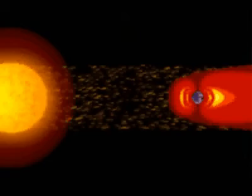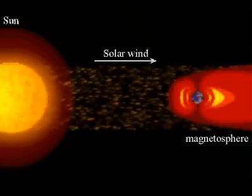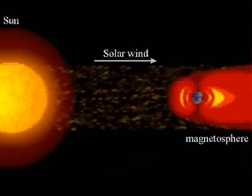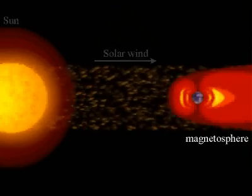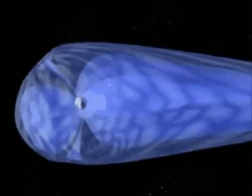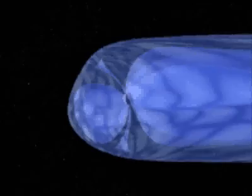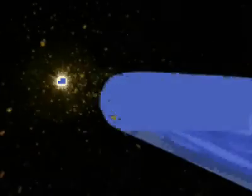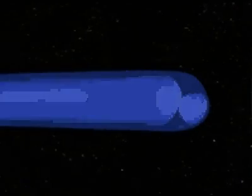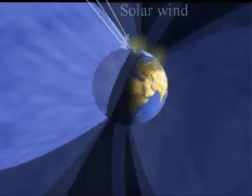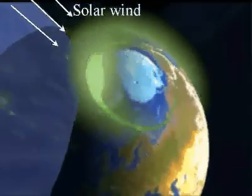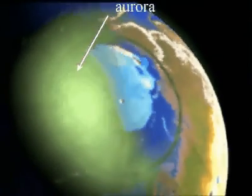Above 100 kilometers in the atmosphere, the Earth's magnetic field plays a dominant role. It produces the so-called magnetosphere. As shown in this animation, it shields us from the charged particles that make up the solar wind. The flow of the solar wind around the Earth's magnetosphere distorts it. Powerful eruptions on the Sun disturb the solar wind, and the Earth's magnetosphere reacts by producing the impressive northern lights.